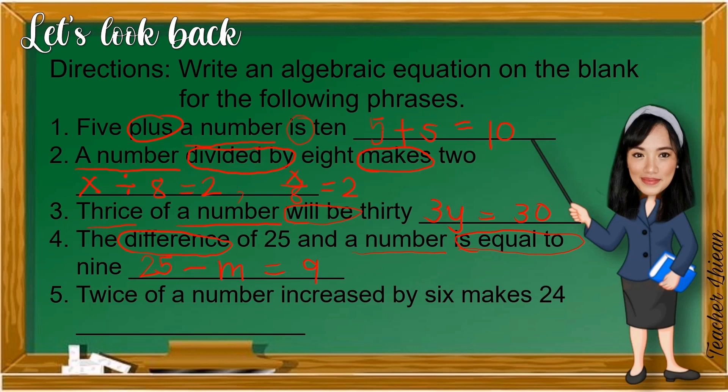Number 5, twice of a number increased by 6 makes 24. Twice pertaining to multiplication. Increased by pertaining to addition. Makes pertaining to equal symbol. So, twice of a number 2N increased by 6 is equal to 24.